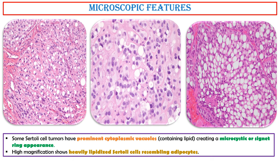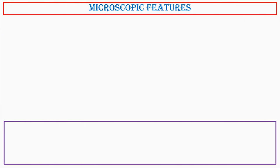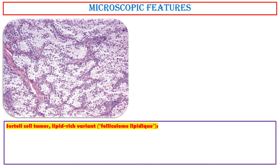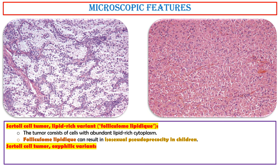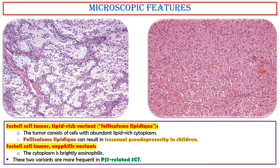In this photo, high magnification shows heavily lipidized Sertoli cells resembling adipocytes. Sertoli cell tumor, lipid-rich variant — folliculoma lipidique — consists of cells with abundant lipid-rich cytoplasm, and can result in isosexual pseudoprecocity in children. Sertoli cell tumor, oxyphilic variant, has brightly eosinophilic cytoplasm. These two variants are more frequent in Peutz-Jeghers syndrome-related Sertoli cell tumors.